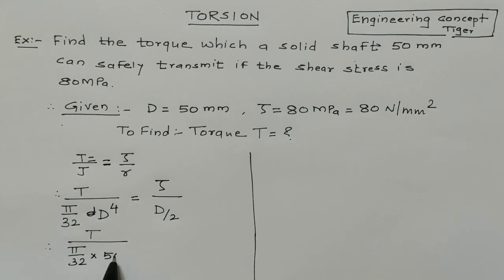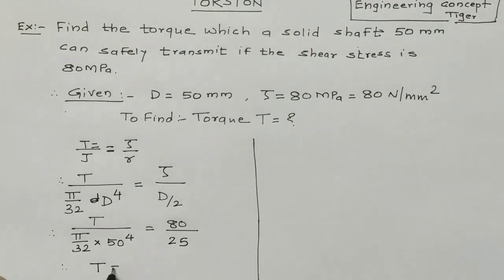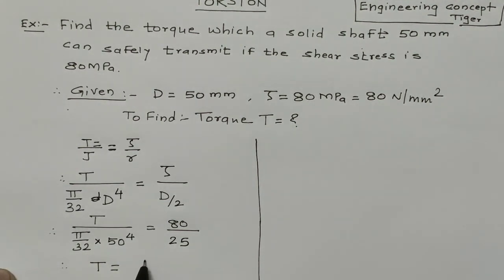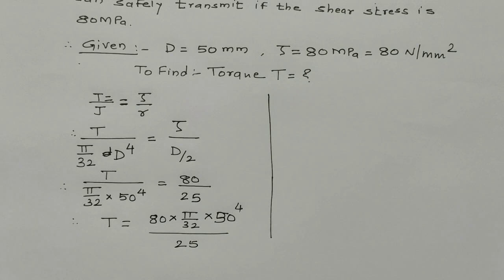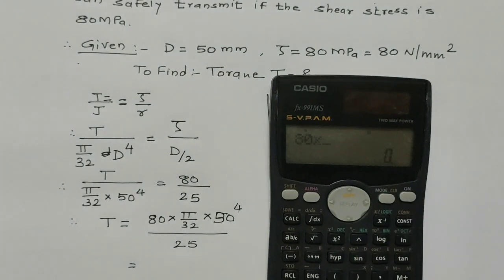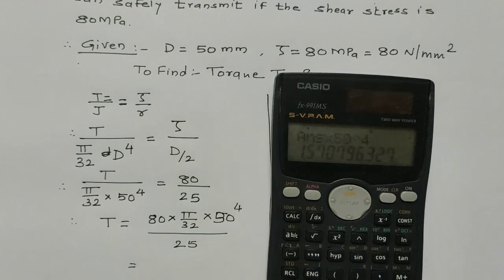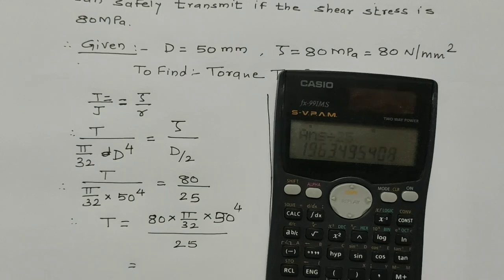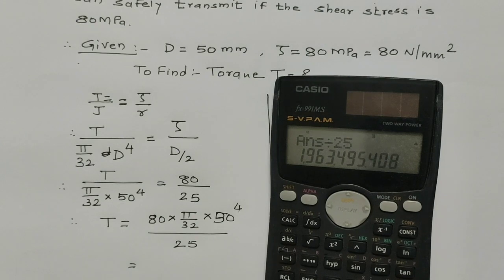Now by putting values we will get T. So T upon π/32 into 50⁴ is equal to 80 upon 50/2, that means 25. So T is equal to 80 by 25 times π/32 times 50⁴.